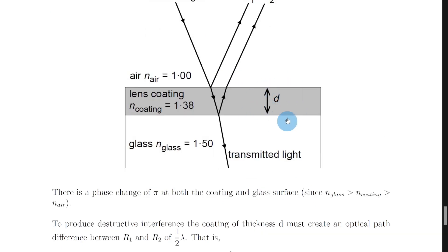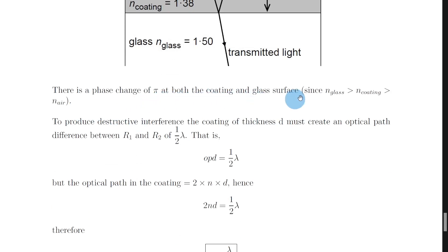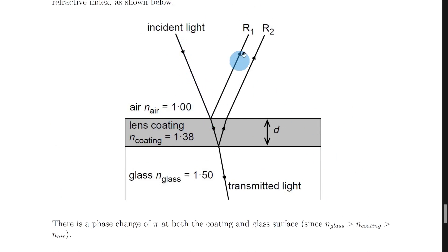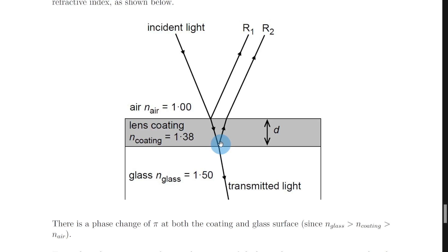There is a phase change of pi at both the coating surface and the glass surface, since the refractive index of the glass is greater than the refractive index of the coating, which is also greater than the refractive index of air. Because the light forming R1 reflects off the first surface where we're going from a smaller refractive index into a higher refractive index — a less dense medium into a more dense medium — the light undergoes a phase change of pi on reflection. The same applies at the second surface going from refractive index 1.38 into glass with refractive index 1.50, so again we get a phase change of pi. Both reflected rays therefore undergo a phase change of pi on reflection.